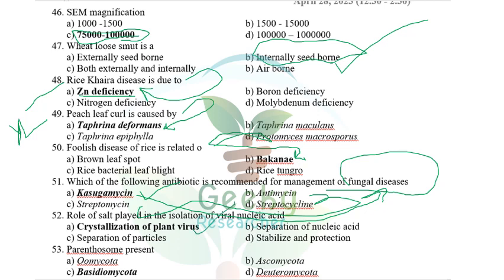The role of salt in isolation of nucleic acid is crystallization. In 1935, W.M. Stanley crystallized TMV using ammonium sulfate, for which he received the Nobel Prize. The salt used for crystallization of plant viruses is ammonium sulfate. I am 100% sure the reason is crystallization of plant virus.